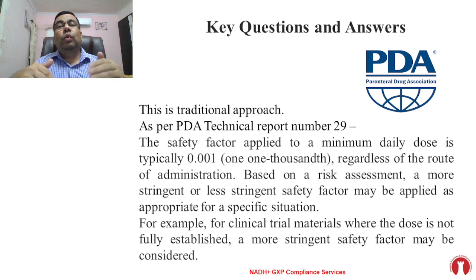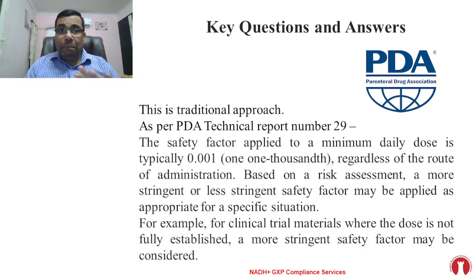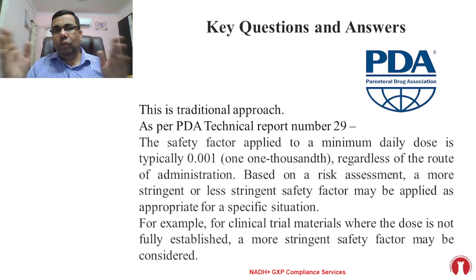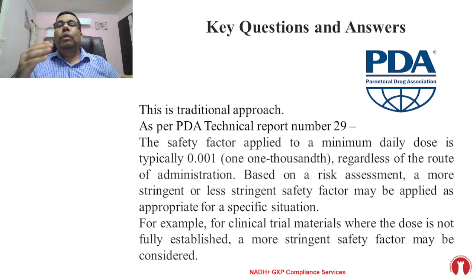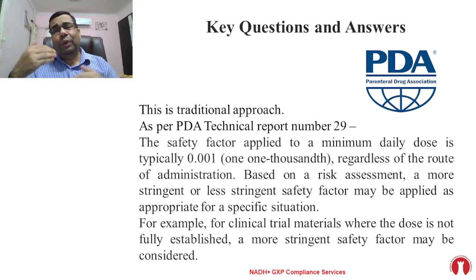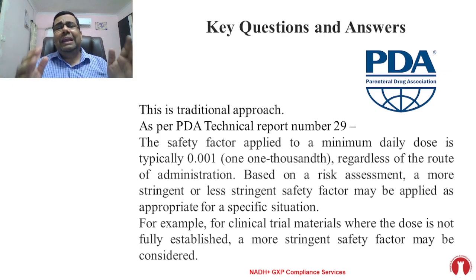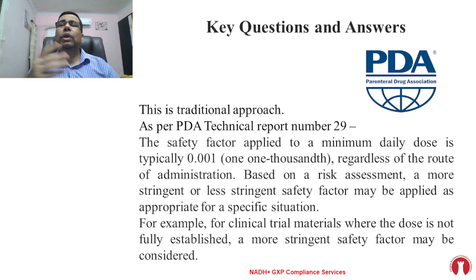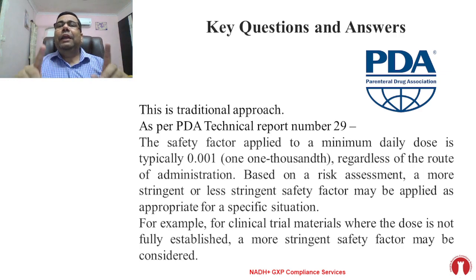An example given by PDA is for clinical trial materials where the dose is not fully established — since the product is under clinical study, you cannot identify the smallest recommended daily dose, so you can use more stringent safety factors. But for commercial manufacturing of different dose formulations, the common factor of 0.001 applies. You need to evaluate based on a risk-based approach whether a more stringent factor is needed, in line with PDA Technical Report Number 29.